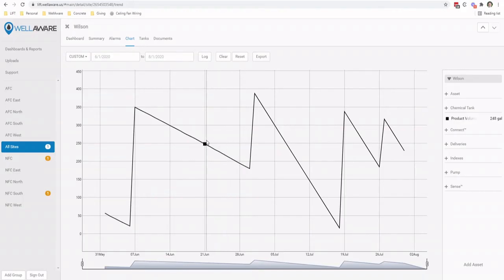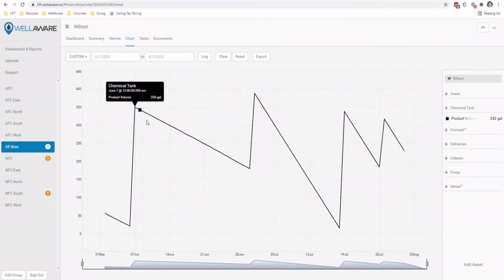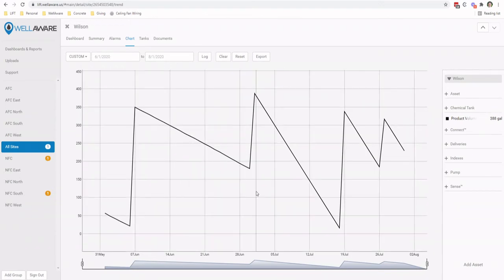All right, so we are logged into the WellAware web app here, and what we are looking at is the trend screen of a chemical tank. And what we are particularly looking at is the product volume in that tank represented by this black line changing over time. This is over the course of about two months. What we can see is at the high point we've got roughly 350 gallons, maybe close to 400 gallons in that tank, and that it's emptying over time. Now there are a couple of things we need to call into view here.